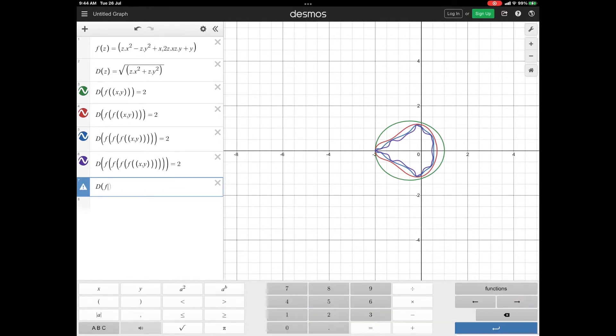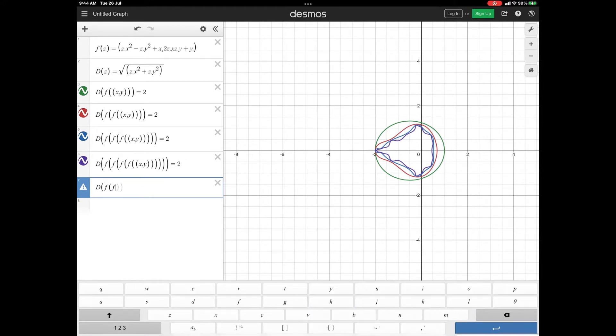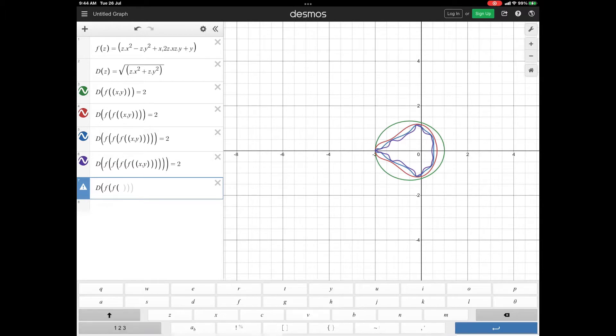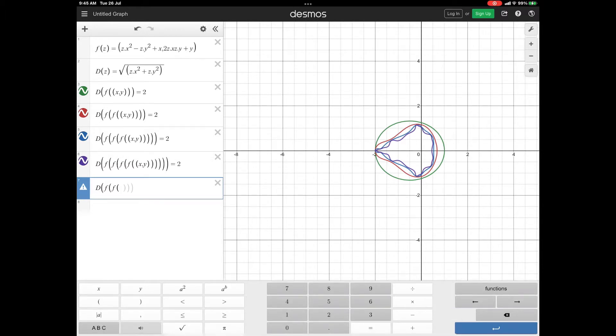Then, we are going to take d of z. d of z is equal to the square root of z x square plus z y square. Now, once you define these two, then let us go to the main graph.